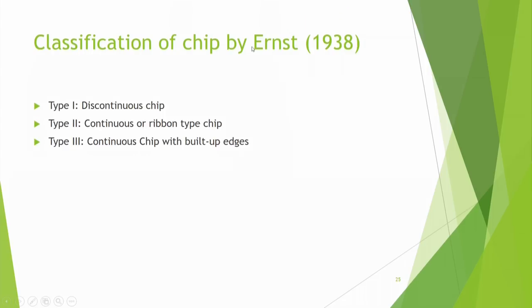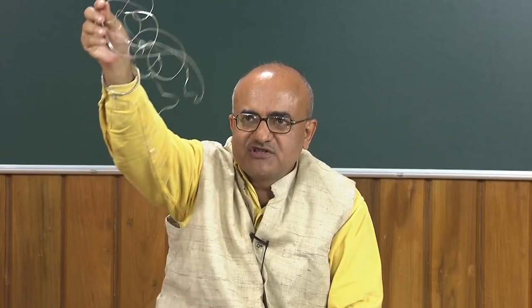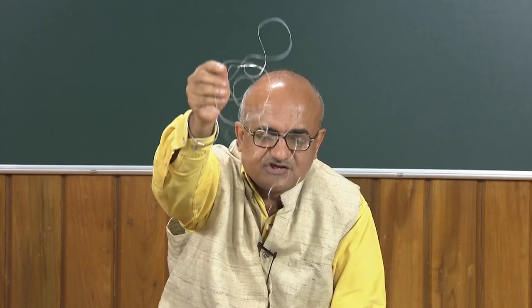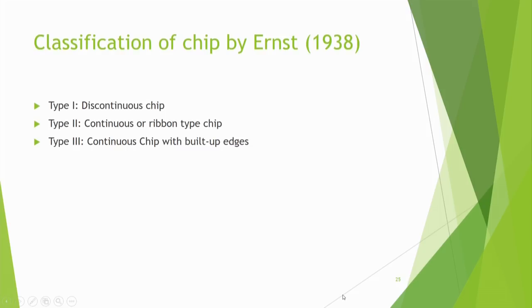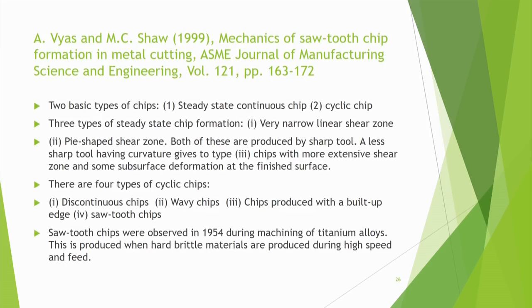This classification of chips was done by Ernst in 1938. Ernst and Merchant started force calculations and simple mathematics of chip formation around the 1940s — they are pioneers. Ernst defined chips in three categories: type 1 discontinuous chips, type 2 continuous or ribbon-type chips, and type 3 continuous chips with built-up edge.